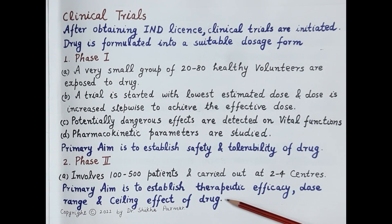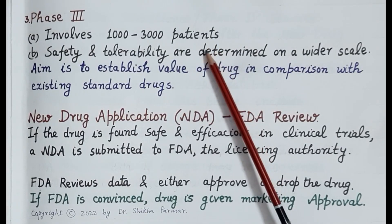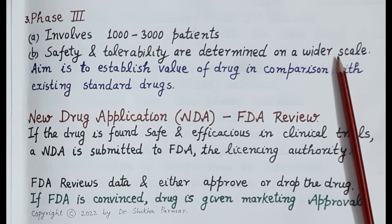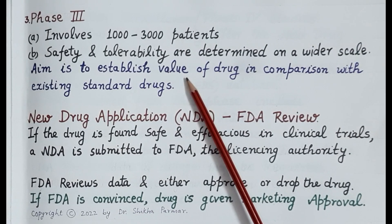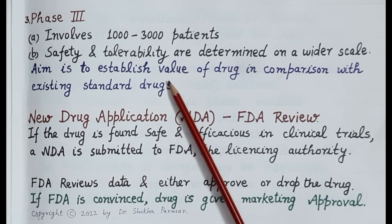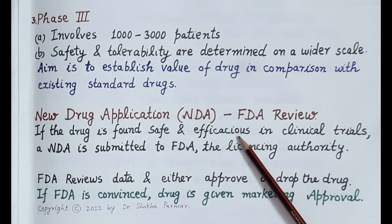Drug candidates that do not exhibit the desired level of clinical efficacy and safety are dropped. Those exhibiting desired safety, tolerability, and therapeutic efficacy are further studied in Phase 3 clinical trials. Phase 3 clinical trials involve 1,000 to 3,000 patients, and safety and tolerability are determined on a wider scale. The aim of Phase 3 is to establish the value of drug candidates in comparison with existing standard drugs. By the end of Phase 3, all drug candidates are screened out and only one potential drug candidate emerges as the new drug.